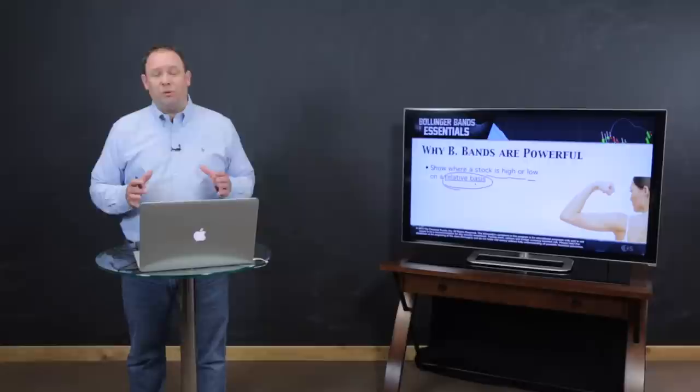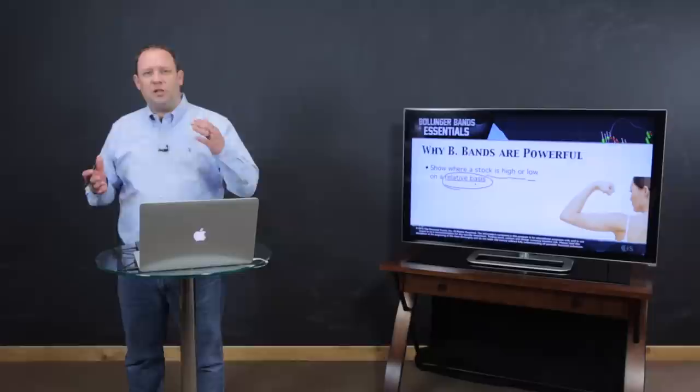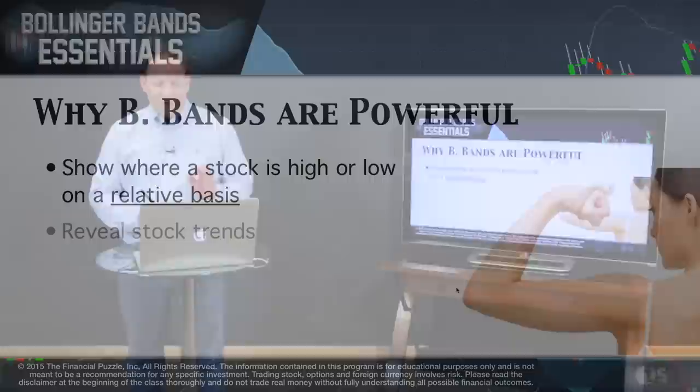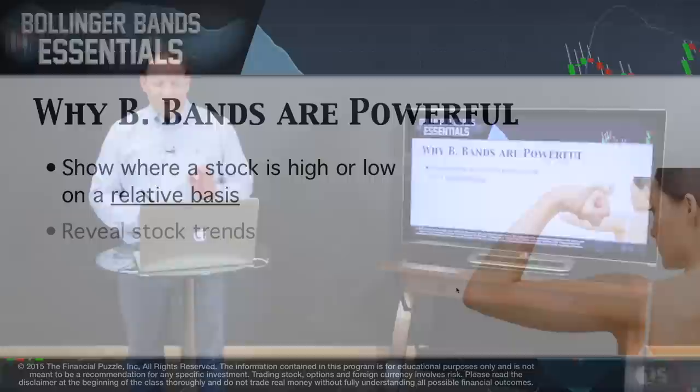That is a really important word: relative. Unlike so many of our other analysis tools which are very definite, the Bollinger Bands are very flexible. If the stock is really high, the bands expand with that. If volatility is really low, they contract along with that. So it's a very relative tool, and that's what makes this tool so powerful. It reveals stock trends and provides a very visual way to look at trade setups that are very easy to identify.